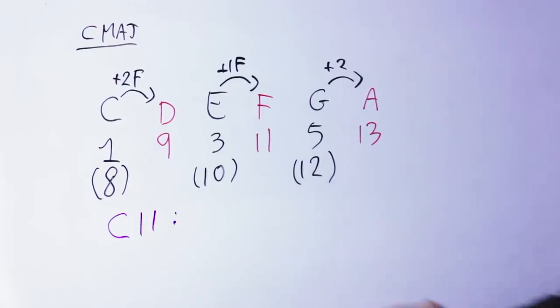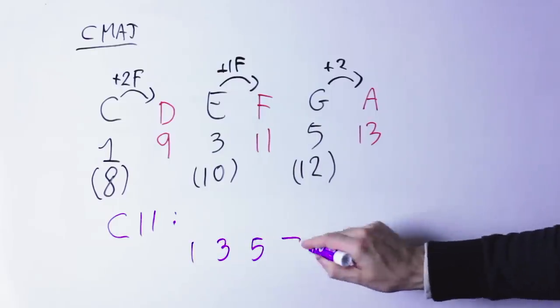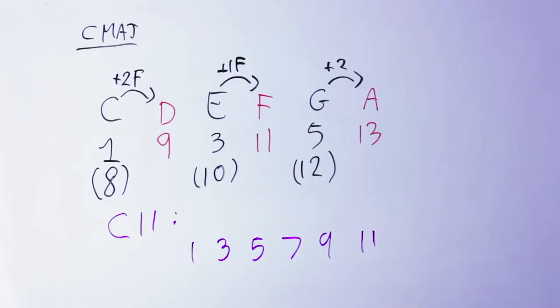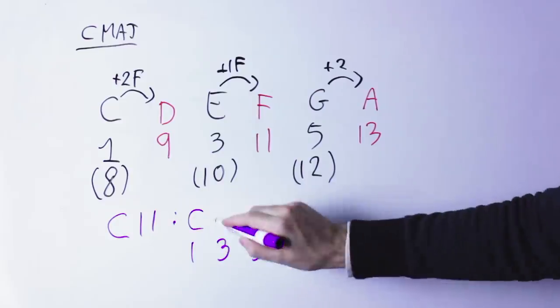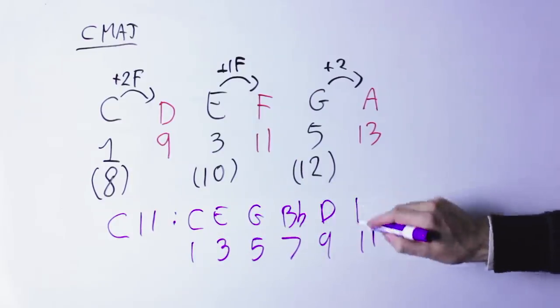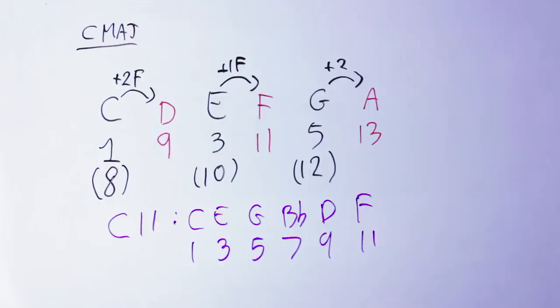Another example, C11. We include all the notes up to the eleventh. So the one, the three, the five, the seven, the nine, the eleventh. C, E, G, B flat D, F.